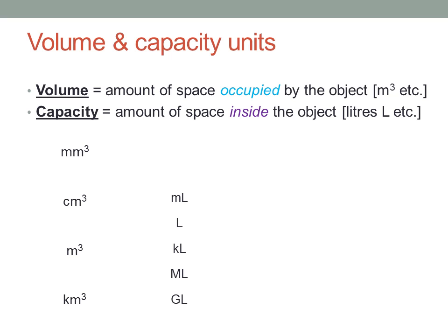Technically, there is a difference. Volume is the amount of space occupied by an object, and capacity is the amount of space inside an object.